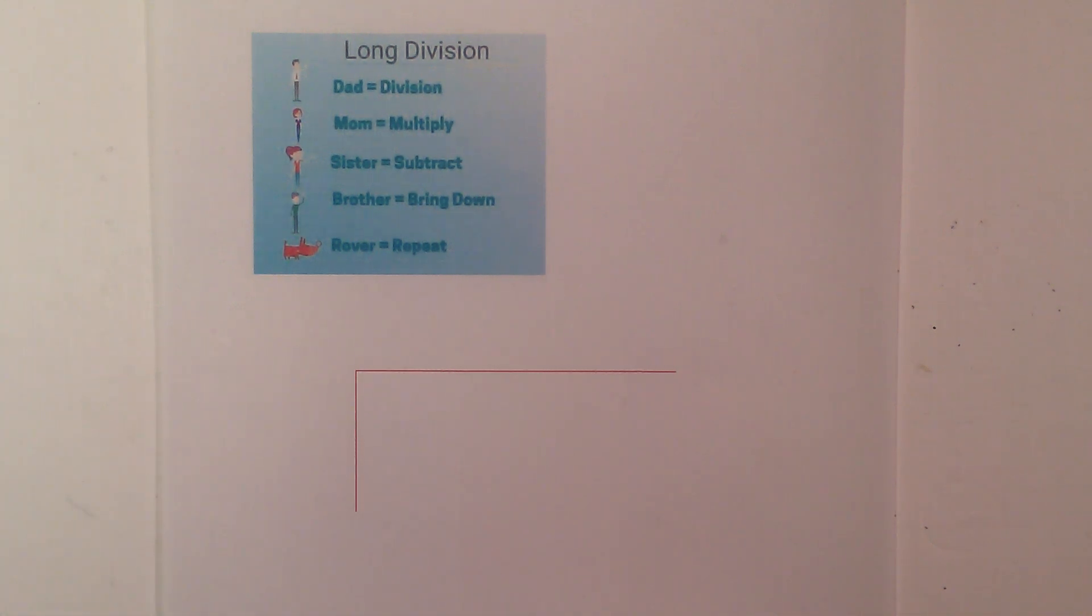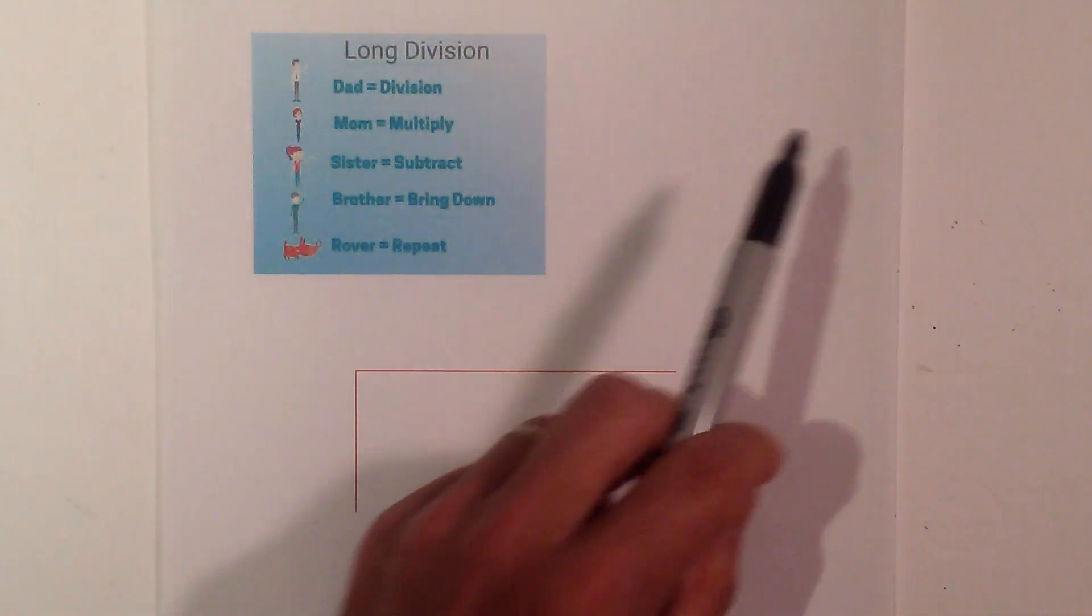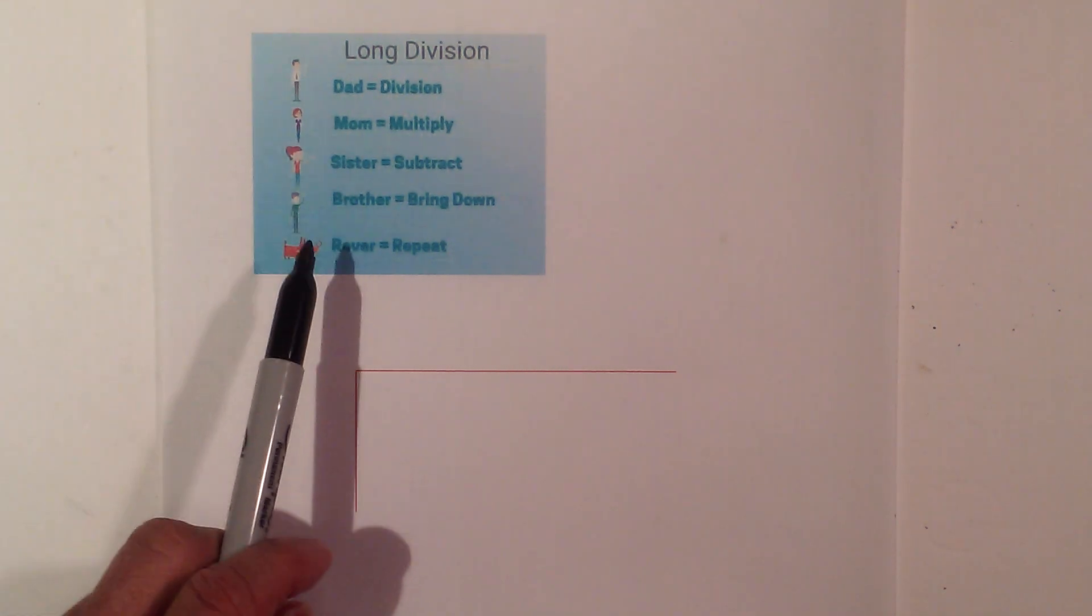Here is a mnemonic device to help you remember, kind of like King Henry died by drinking chocolate milk to learn the metric system. You have Dad, Mom, Sister, Brother, Rover.